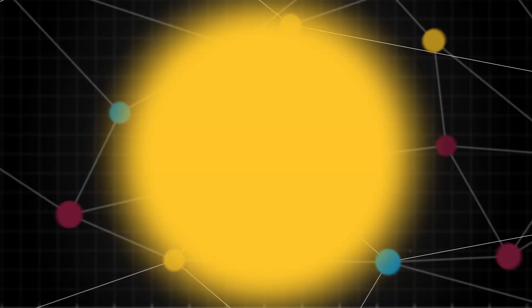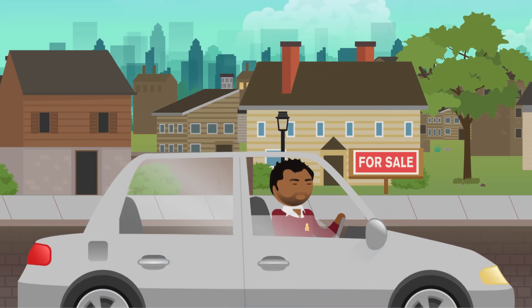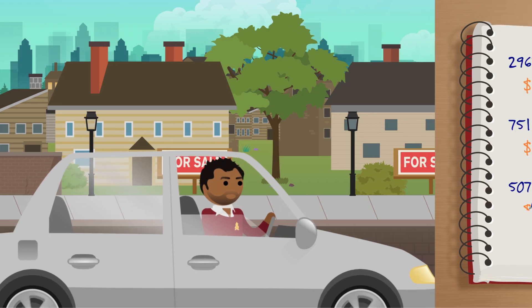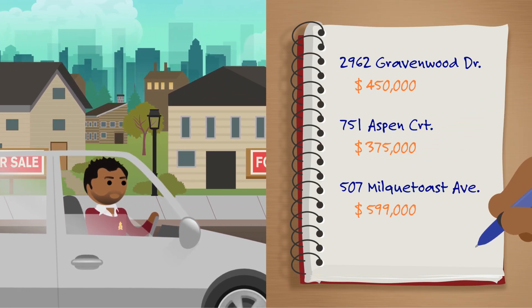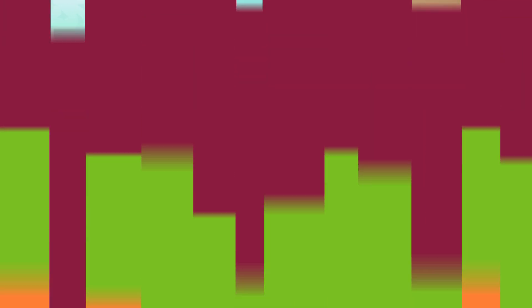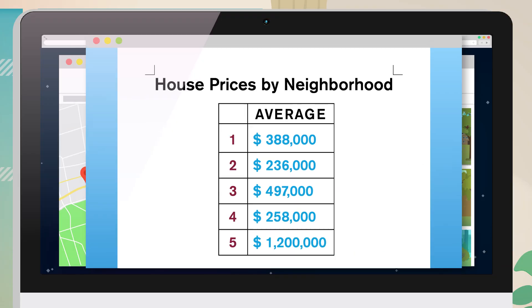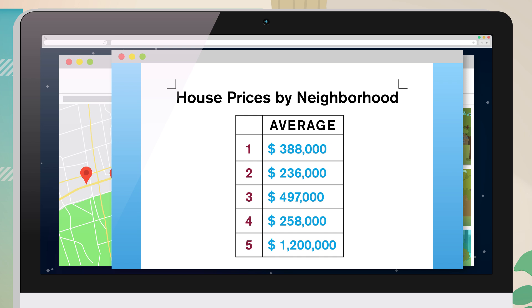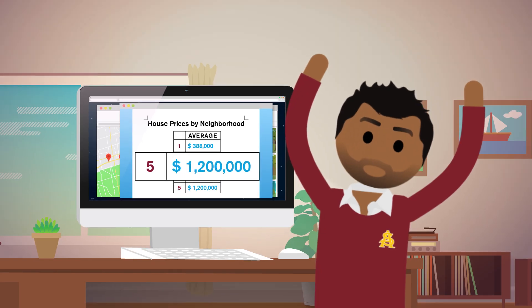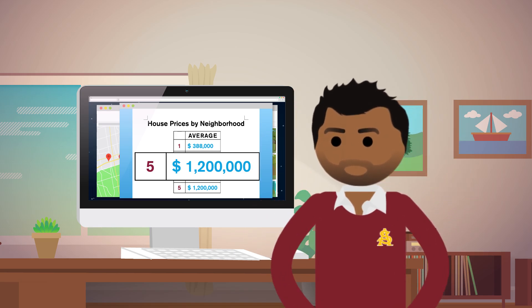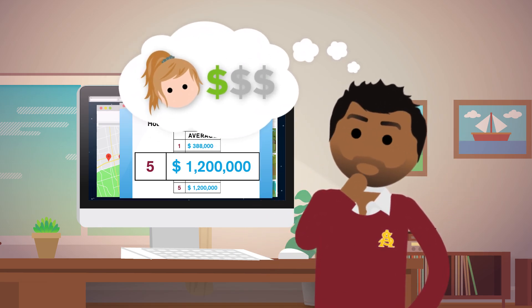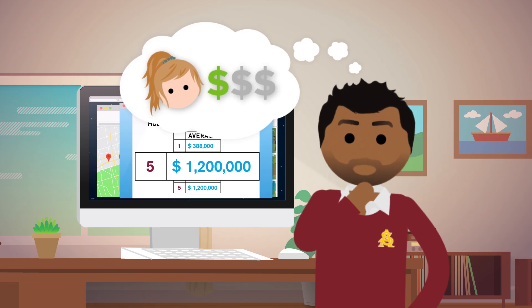Now let's make moves to find our own dream house. Suppose you like to drive around looking for houses for sale. As you house hunt, you record the asking price and address of each house where you see a for sale sign. After a long day of driving and some snooping on Zillow, you decide to find the average house price per neighborhood. One neighborhood sticks out with an average house price of over a million dollars! But you know people who live in that neighborhood, and you're pretty sure they aren't millionaires. What's going on with this data?